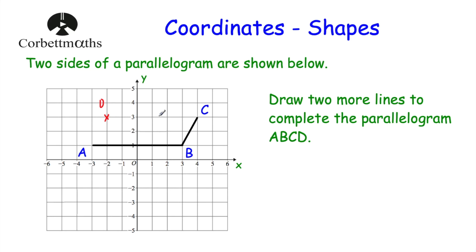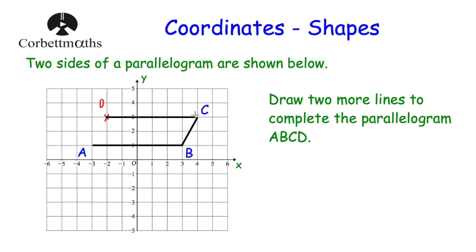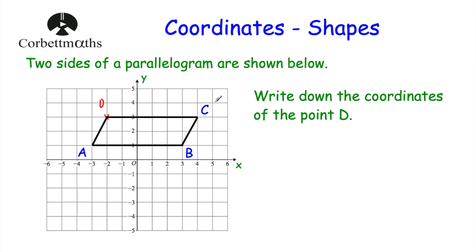Let's check: A, B would be parallel to D, C, and they're the same length — 6 and 6. Let's also consider the left-hand side and the right-hand side. To get from A to D, we go 1 to the right and 2 up, and to get from B to C we also go 1 to the right and 2 up, so they're also the same length and parallel. So let's draw those lines — connect D to C for the top of the parallelogram, and connect A to D for the left-hand side. The next part asks us to write down the coordinates of point D — going to negative 2 on the x-axis and up 3. So the coordinates of point D would be negative 2, 3.